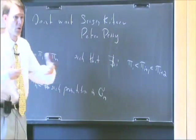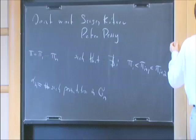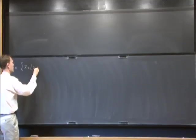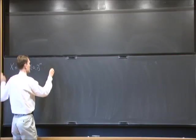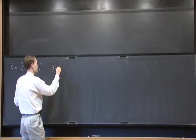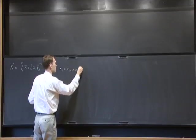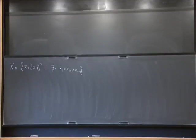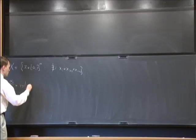I'm going to turn this combinatorial problem into a geometric problem. Let X be all the points in the n-dimensional unit cube such that there is no index i with x_i < x_{i+1} < x_{i+2}. I claim that alpha(n) over n factorial is just the n-dimensional volume of this set.